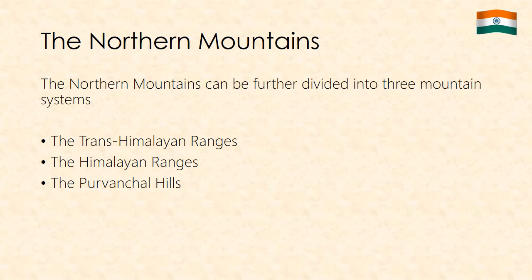The Northern Mountains: This is the region of towering young fold mountains that stretches in wide sweeping arcs across northern and northeastern India, effectively isolating the country from the rest of Asia. The Northern Mountains can be further divided into three mountain systems: the Trans-Himalayan Ranges, the Himalayan Ranges and the Purvanchal Hills.